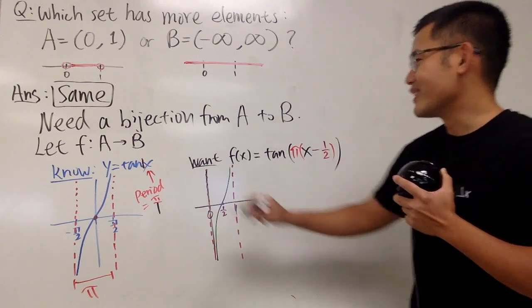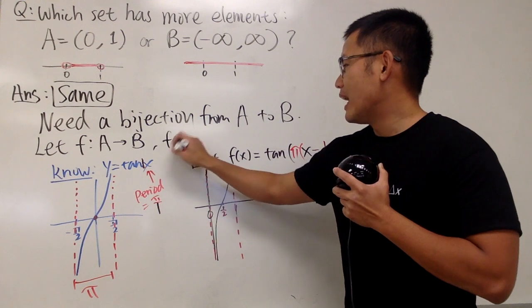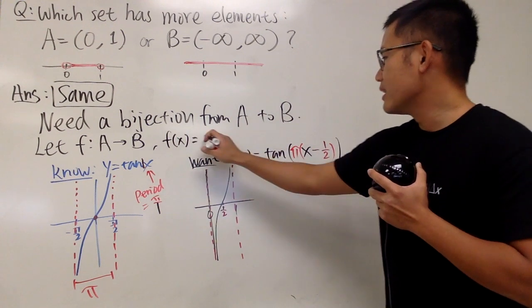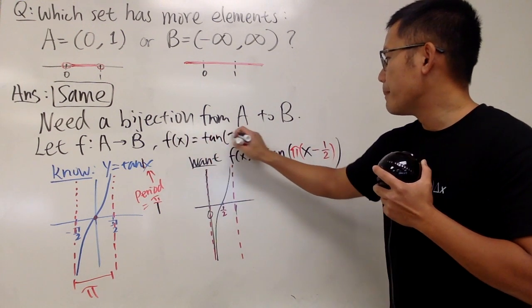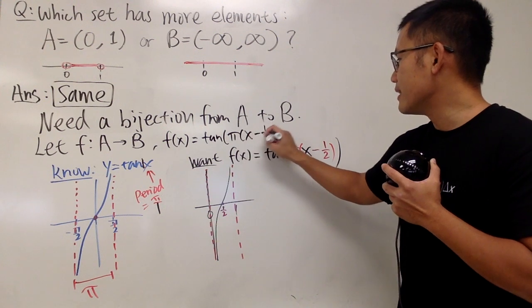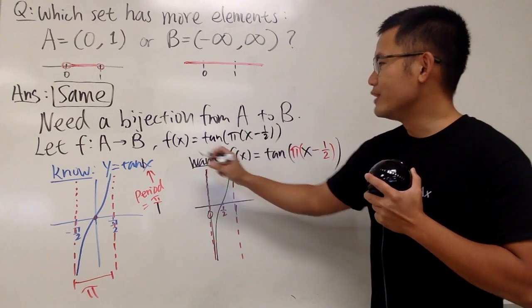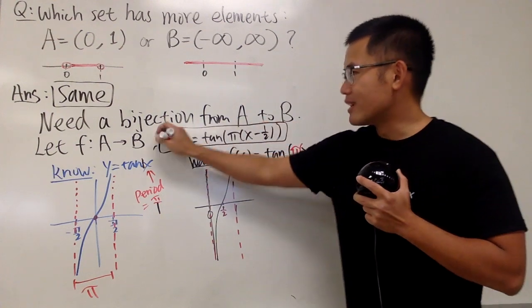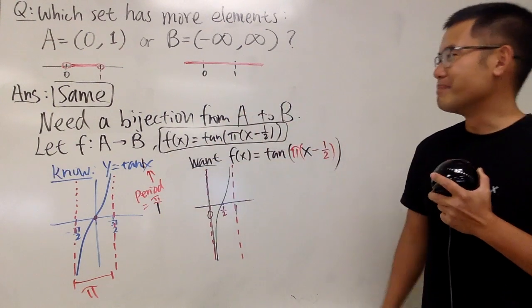Therefore, that's the answer. So, of course, I would just say our function has the formula tangent of pi times x minus 1 half. So, this right here will be my answer to this bijection.